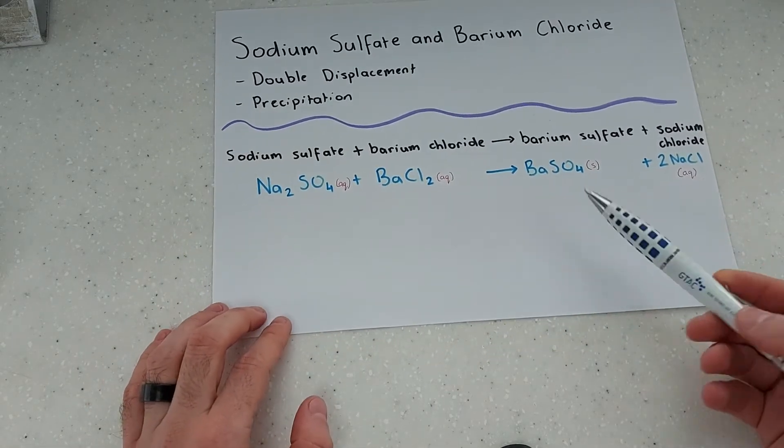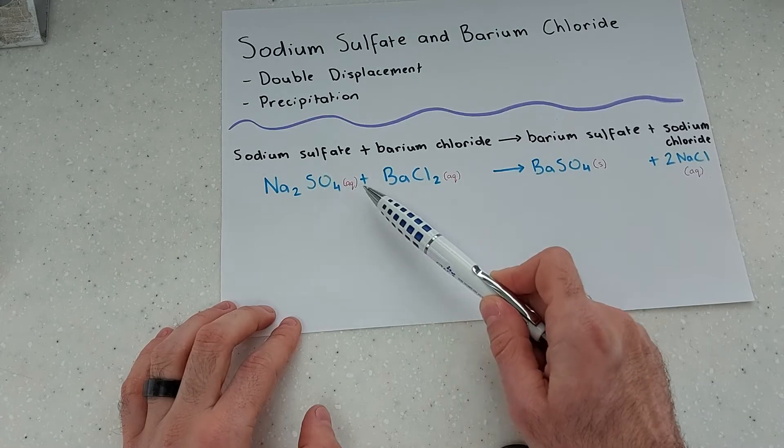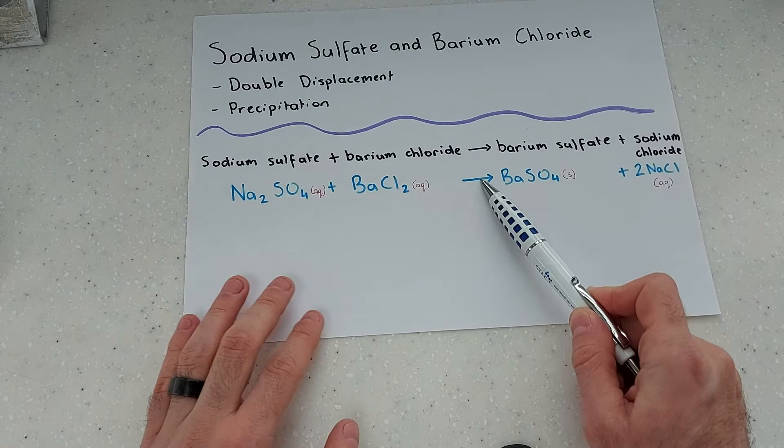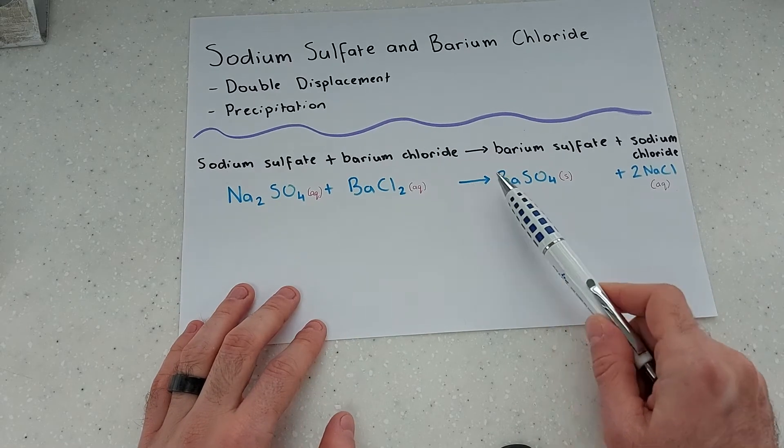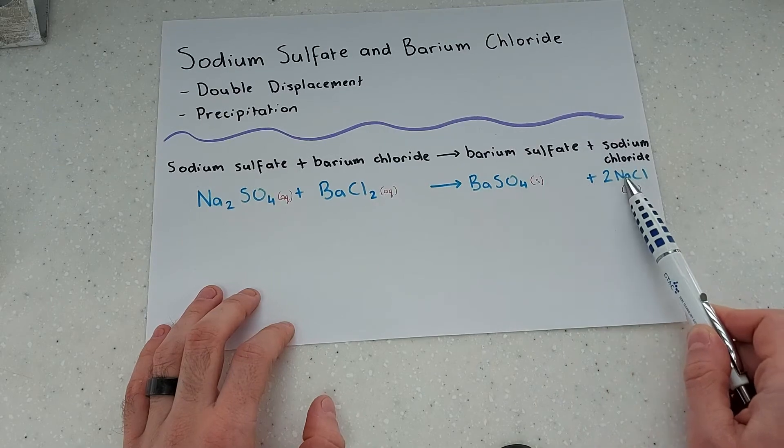The chemical equation is sodium sulfate plus barium chloride. Chemical reaction occurring will give me solid barium sulfate plus sodium chloride.